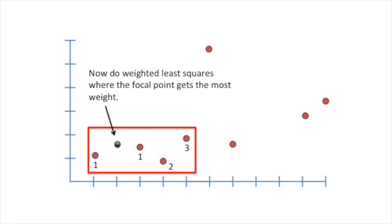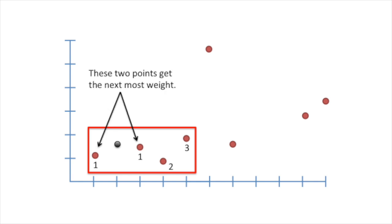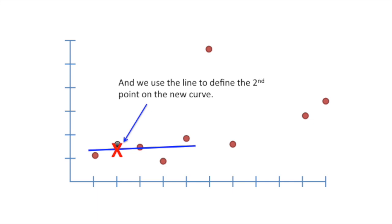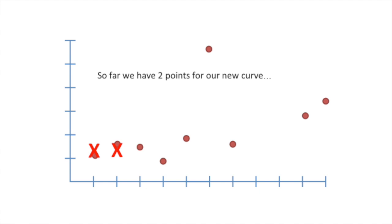Now we do weighted least squares where the focal point gets the most weight. These two points get the next most weight. And this point gets the least weight. Here's our fitted line. And we use the line to define the second point on the new curve.